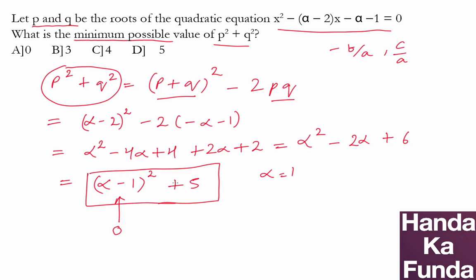The first portion is 0 and hence my answer will be 5, which is given as option D. So my answer will be option D. Thank you.